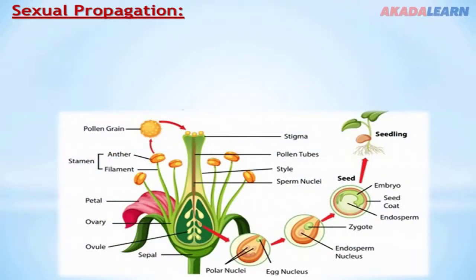Sexual propagation is the propagation or multiplication of plants by the use of seed. This method is considered a sexual method because two sex cells are required to produce a seed, and at the end, the seed is used for propagation of crop plants.